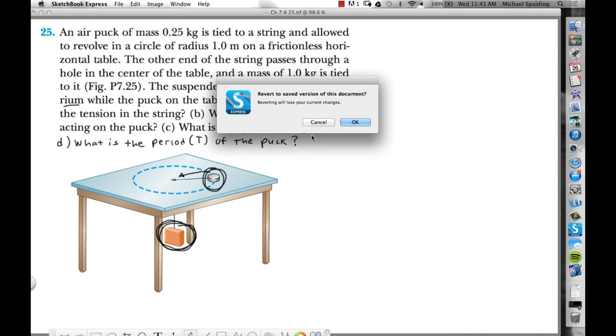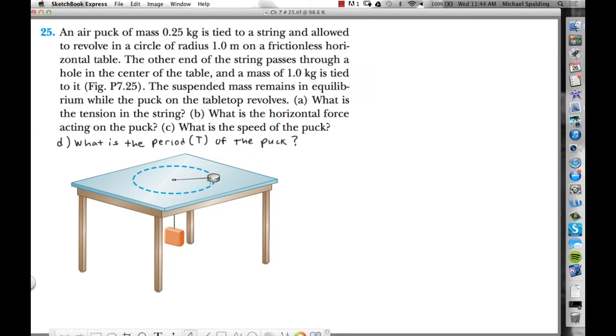Now let's label our info. We're given the radius of this circle. They tell us the radius of the circle is equal to 1 meter. The mass of the puck is 0.25, and the mass of this guy under the table is 1 kilogram. And I think that's all of our info.